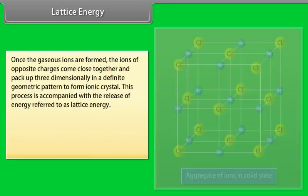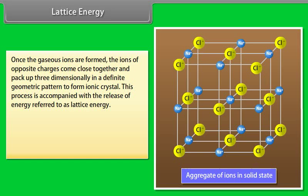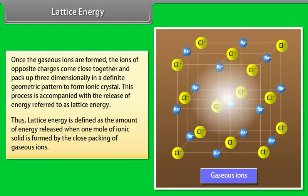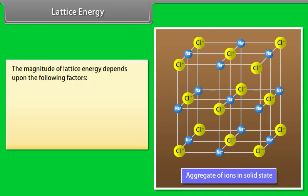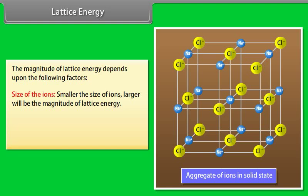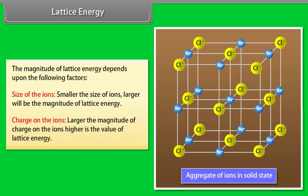Lattice energy: once the gaseous ions are formed, the ions of opposite charges come close together and pack up three-dimensionally in a definite geometric pattern to form an ionic crystal. This process is accompanied by the release of energy referred to as lattice energy, defined as the amount of energy released when one mole of ionic solid is formed by the close packing of gaseous ions. The magnitude of lattice energy depends on: size of ions — smaller the size, greater the interionic attraction and larger the lattice energy; and charge on ions — larger the magnitude of charge, higher the value of lattice energy.